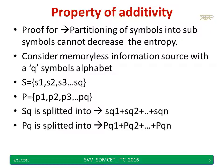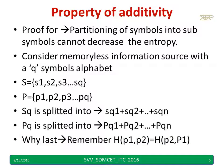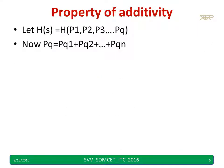Consider a memoryless information source with q symbols s1 to sq and probabilities p1 up to pq. What I am doing is dividing symbol sq into n sub-symbols: sq1, sq2, sq3 up to sqn, and similarly dividing the probability pq into pq1, pq2 up to pqn. Most textbooks divide only pq and the sq symbol. Even if you take a middle symbol it's fine, because we know H(p1, p2) = H(p2, p1).